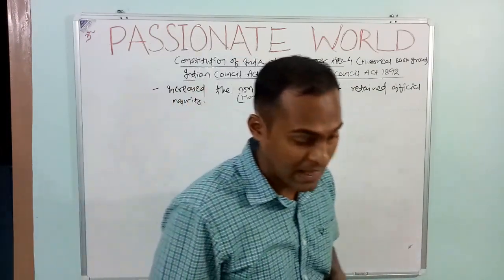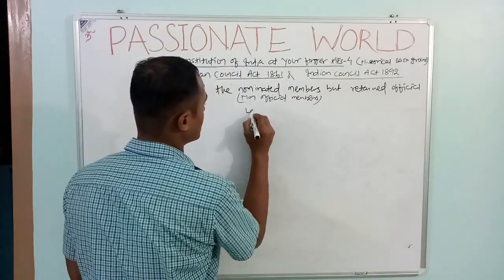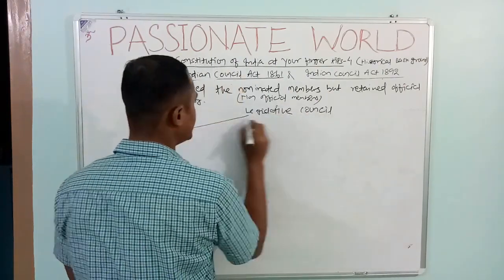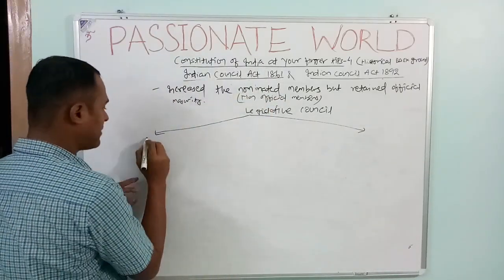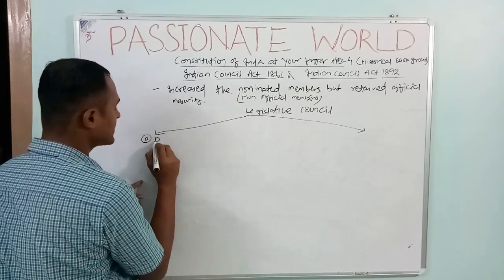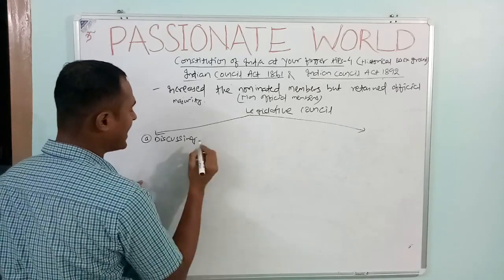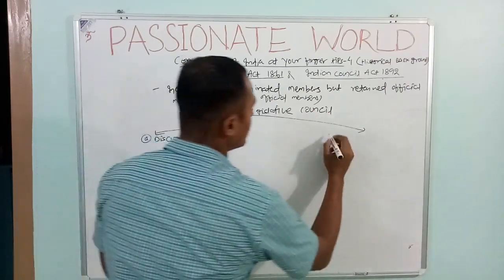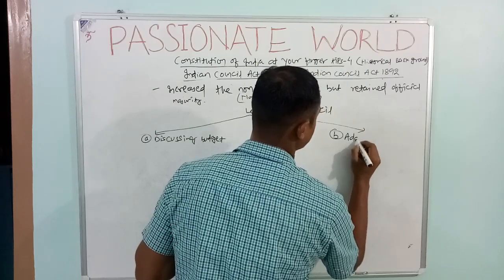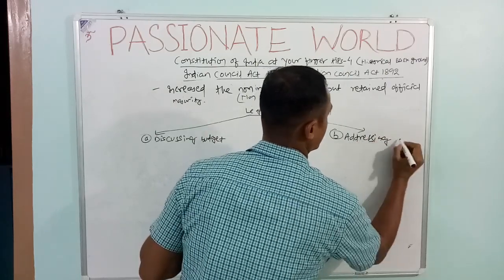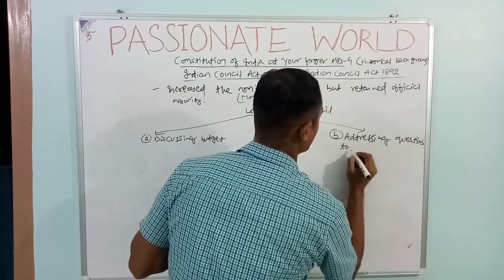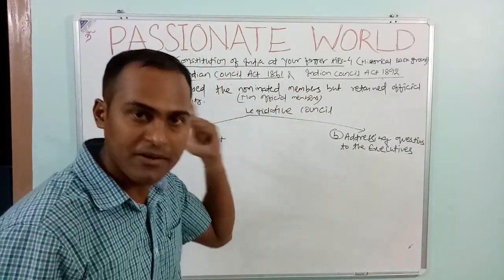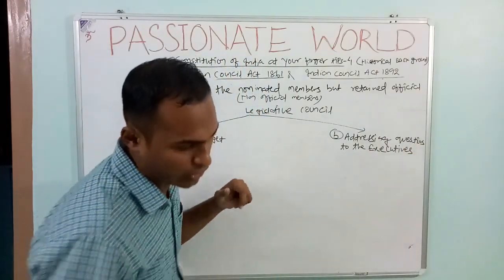The Legislative Council was given certain new powers. Power number one: the council was given the right to discuss the budget — previously there was no such power for Indians. Power number two: addressing questions to the executive. Previously, Indians had no right to address questions to the executive, but this was introduced in the Act of 1892.